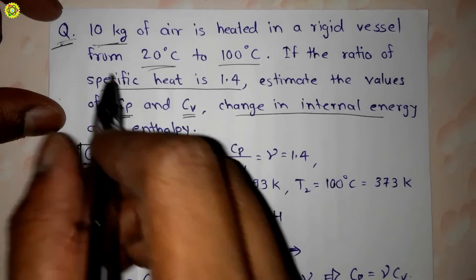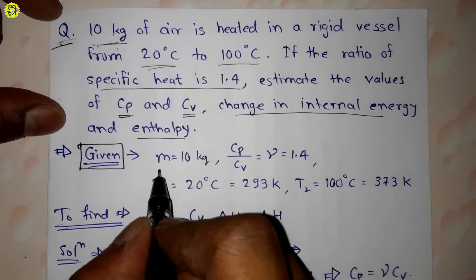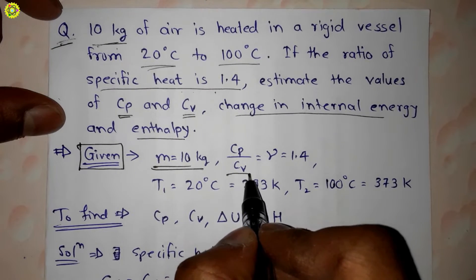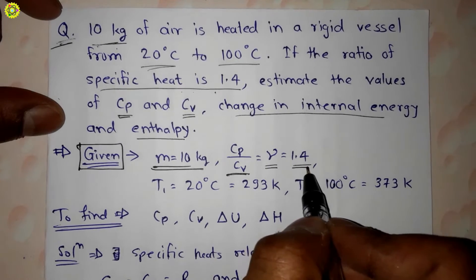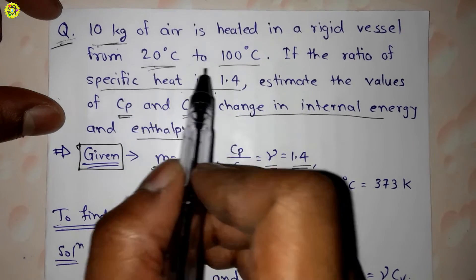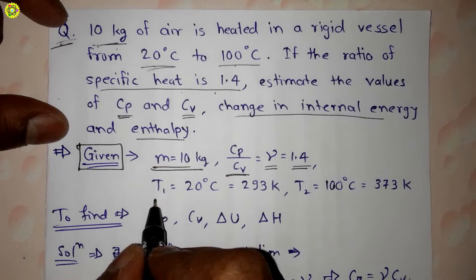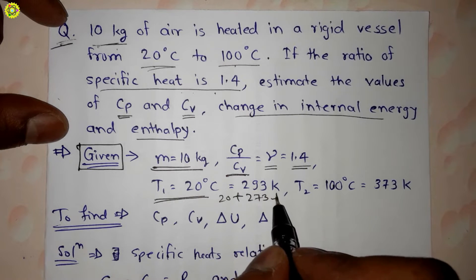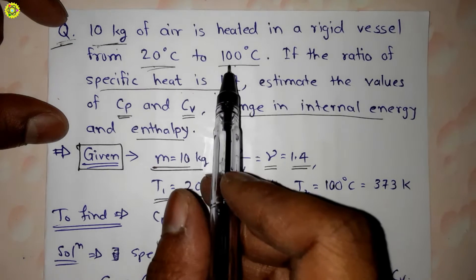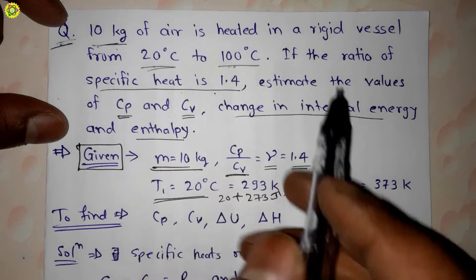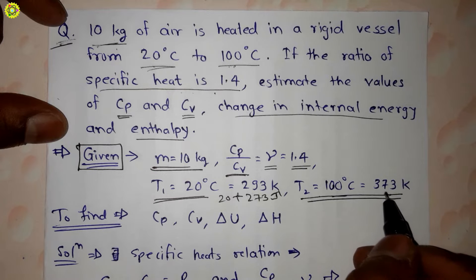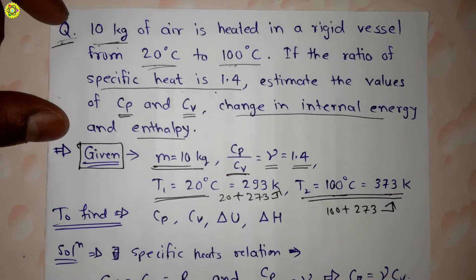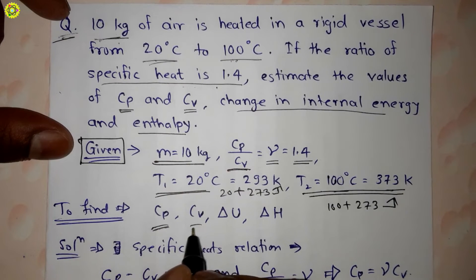Writing down the given data: mass of air is 10 kg. The ratio of specific heats cp/cv equals gamma, which is equal to 1.4. Air is heated from 20 degrees Celsius to 100 degrees Celsius, so T1 is 20 degrees Celsius, which equals 293 Kelvin (20 + 273), and T2 is 100 degrees Celsius, which equals 373 Kelvin.